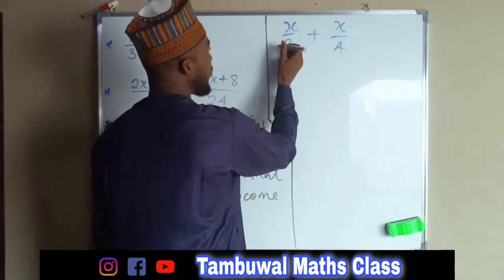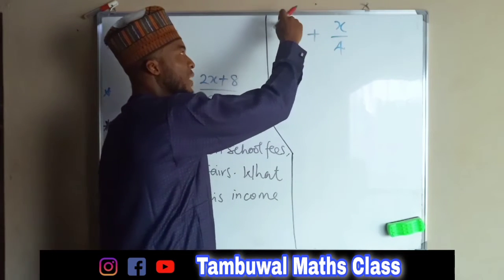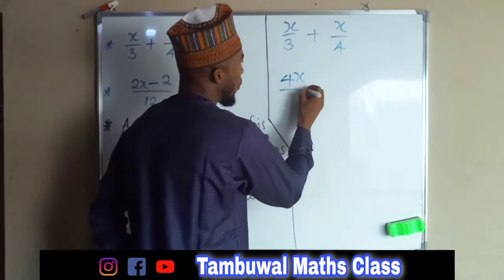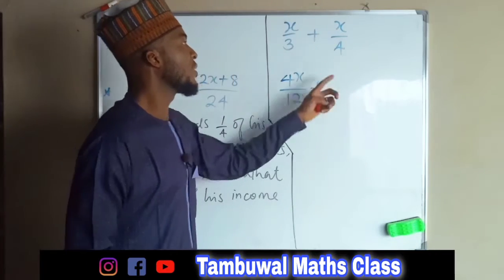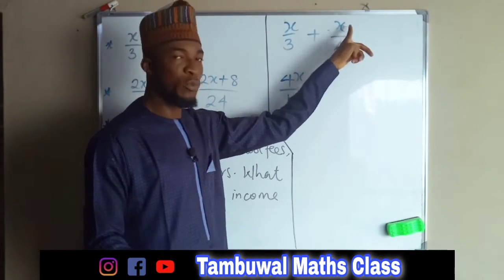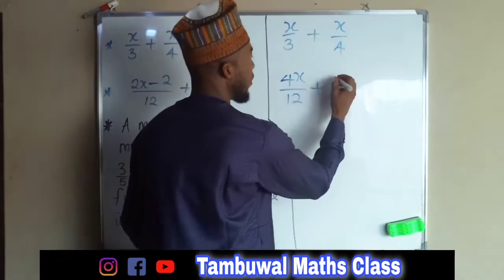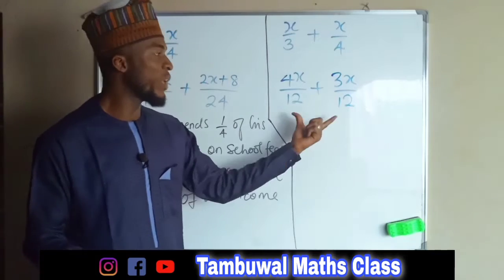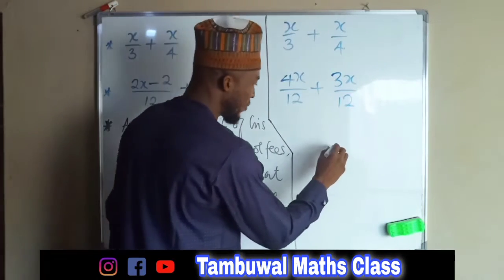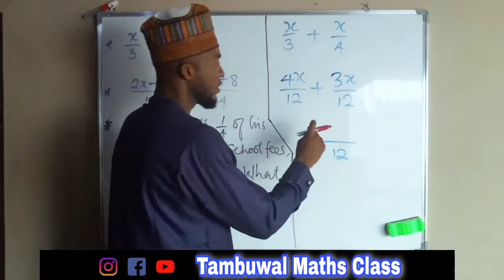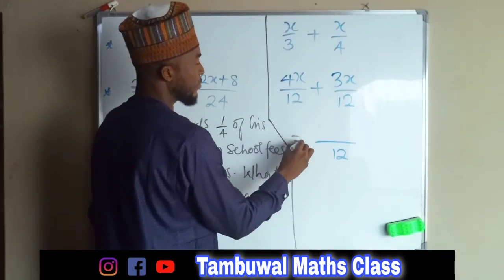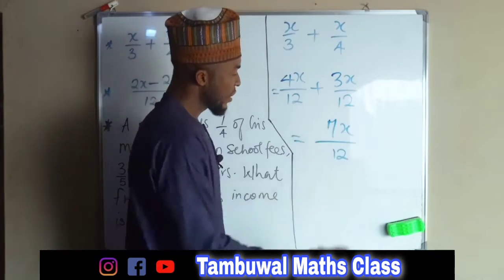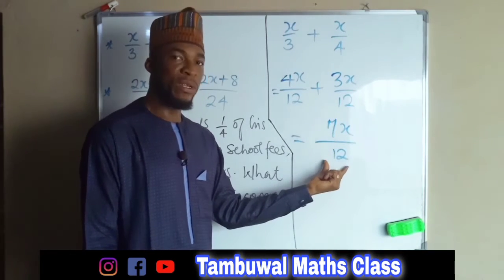So what we are going to do is multiply both numerator and denominator by 4, giving us 4x over 12, plus we multiply the other expression both numerator and denominator by 3, giving us 3x over 12. Since we now have a common denominator of 12, we add the numerators together: 4x plus 3x is 7x.